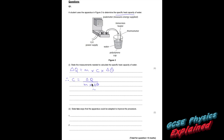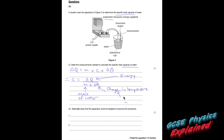In order to calculate the specific heat capacity, we need to know the energy being put in — that's why they've given you a joule meter. You'll need to know the mass of the water, because you're trying to get the specific heat capacity of the water. And the change in temperature. To get the change in temperature, you need the initial temperature and the final temperature. So: energy, mass of water, initial temperature, final temperature — that gets you the four marks.